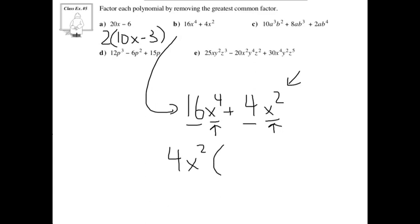So 16x to the power of 4 divided by 4x to the power of 2 is going to be 4x to the power of 2. Plus we have 4x to the power of 2 divided by 4x to the power of 2, which is just going to be 1.